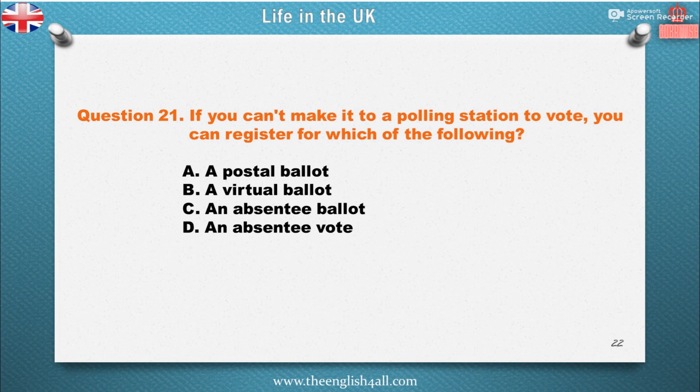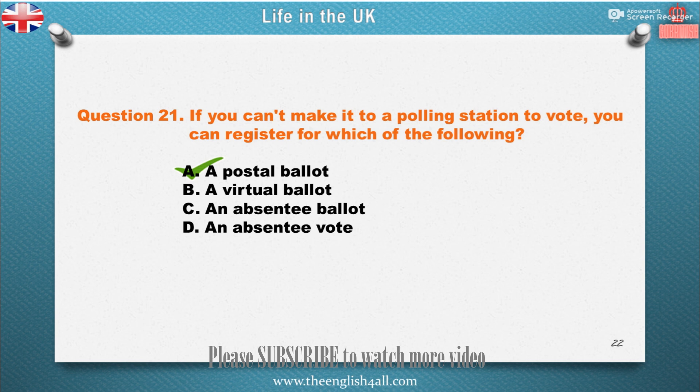Question 21: If you can't make it to a polling station to vote, you can register for which of the following? A. A postal ballot. B. A virtual ballot. C. An absentee ballot. D. An absentee vote. The correct answer is: A postal ballot. Also good to know: if it is difficult for you to get to a polling station or polling place, you can register for a postal ballot. Your ballot paper will be sent to your home before the election.